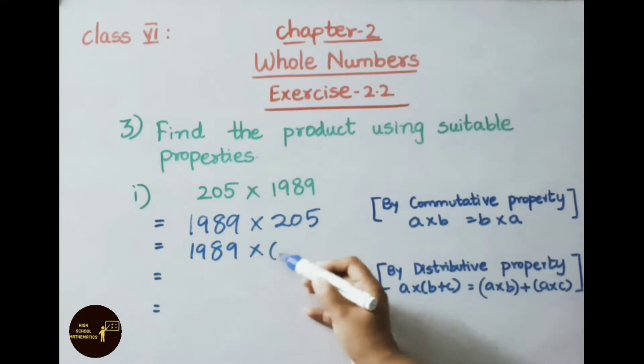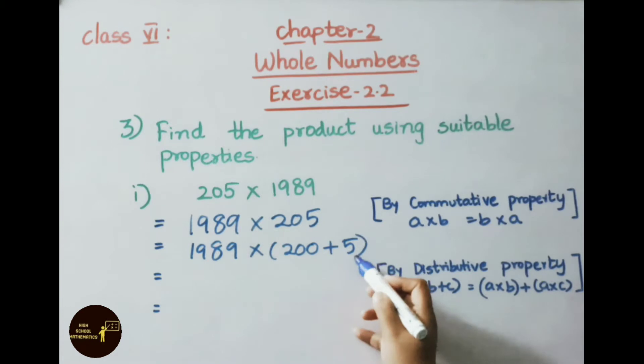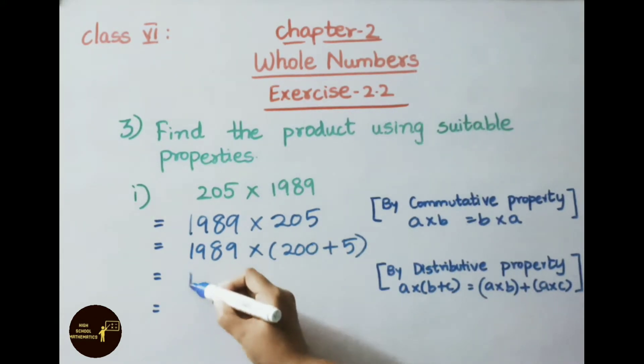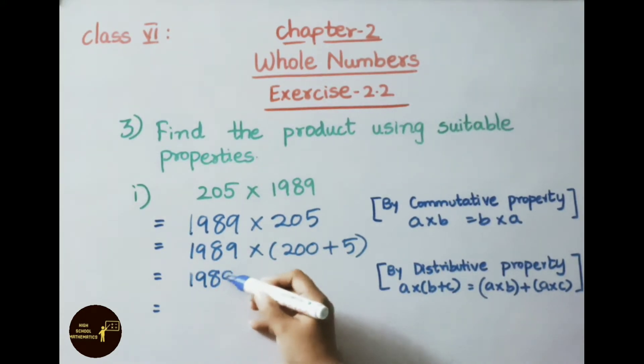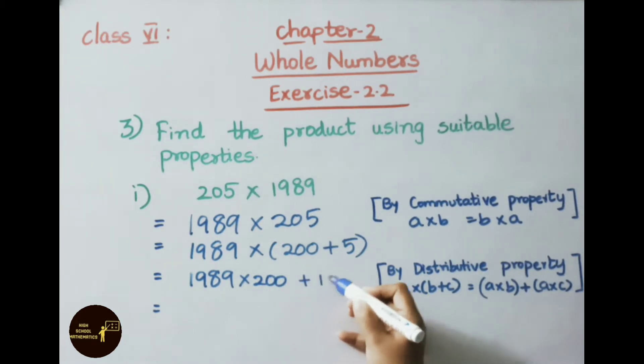Now this is looking like distributive property: a into b plus c can be written as a into b plus a into c. Let us write down 1989 into 200 plus 1989 into 5.